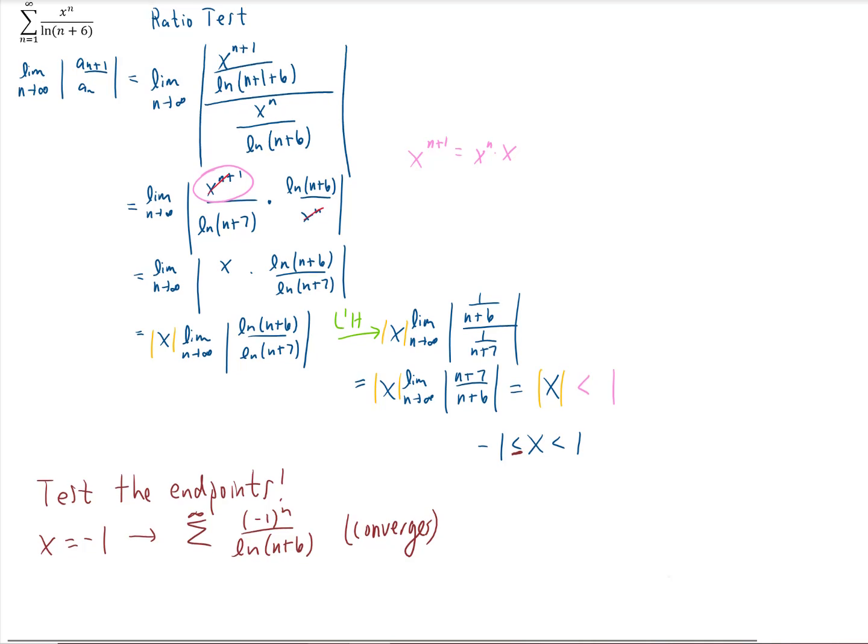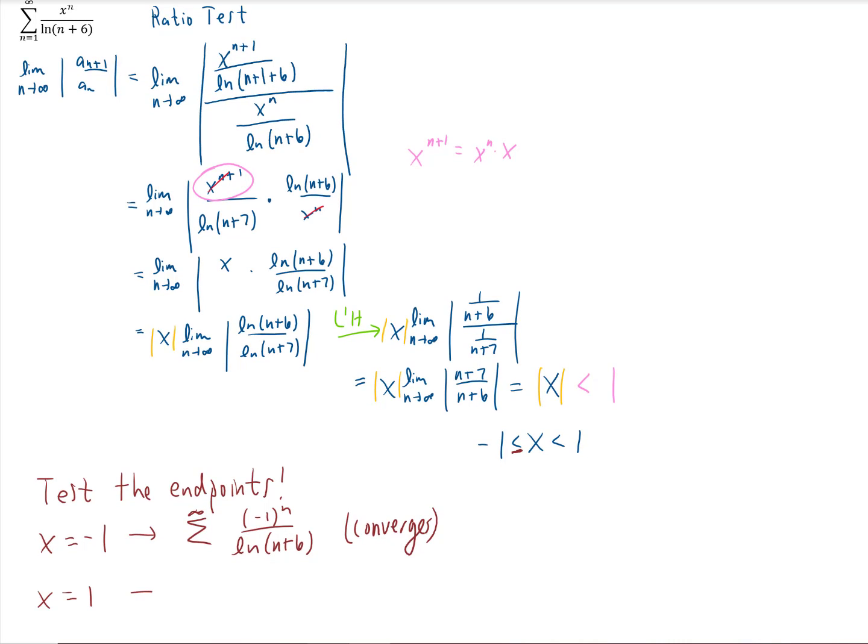We're just going to make a little bit of room and test the other endpoint, that's x equals one. And you'll notice that this series is not alternating. One to the n is simply one in the numerator. So the question is, does this series converge? The answer is actually no, and we could do a couple of different tests to come up with that answer.